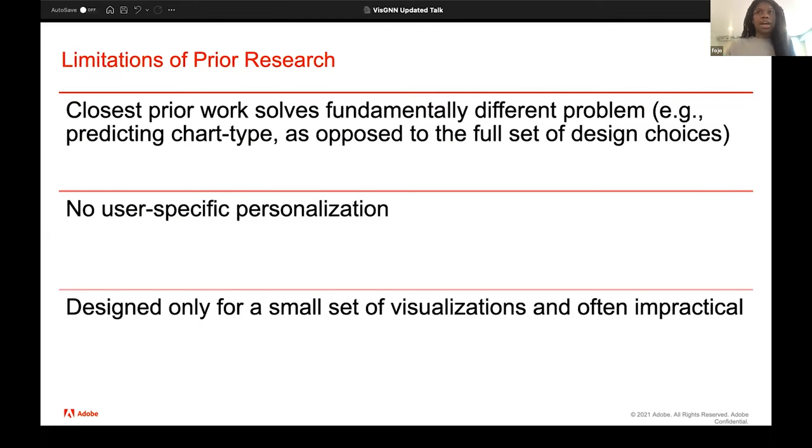The prior research provides a great foundation for automatically generating and recommending visualizations to users. However, the closest prior work solves fundamentally different problems. The prior work does not predict the full set of design choices. It only looks at a subset like chart type in most of that research. And there is no user specific personalization. As previously discussed, the rule-based and machine learning based visualizations were both agnostic of the user and looked at general design preferences of a population. In addition, the prior studies also really only looked at small datasets. But in practice, users have many datasets, and these datasets are large.